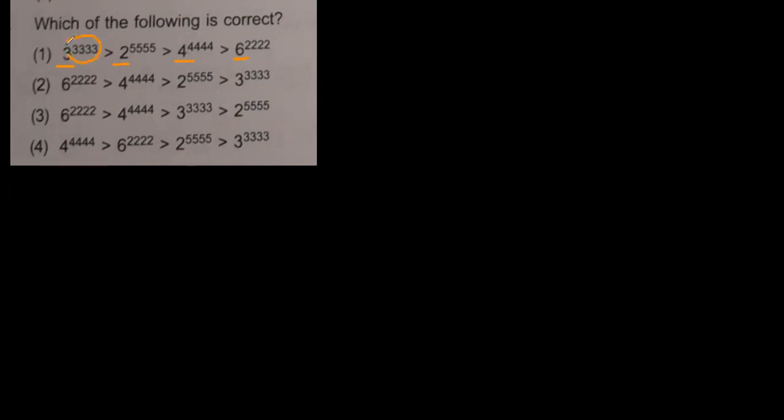We will have to understand the pattern to answer this question. Let's take just these two numbers. Let's talk about how we will decide whether the order given is correct or not. We know three is greater than two, and if you put any positive exponent to these numbers, this inequality will still stand correct.